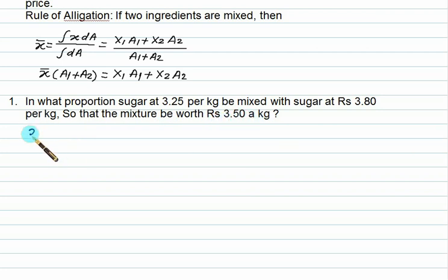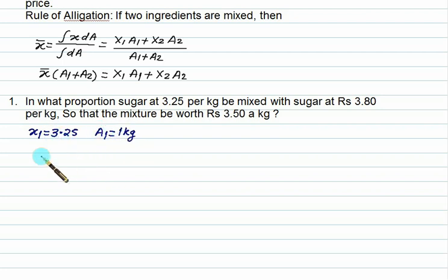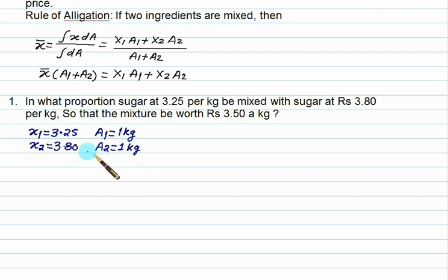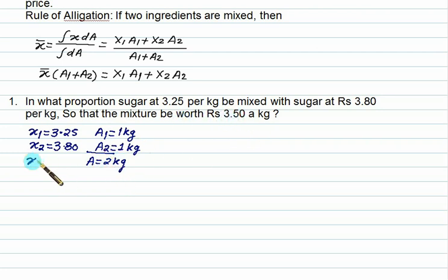So we have x1, which means price — that is 3.25. a1 means quantity. For 1 kg you are charging 3.25. x2 is 3.80 and a2 is also 1 kg. If you mix them you will get a total of 2 kg. The mixture should be worth 3.50 rupees, so we want x bar equal to 3.5.